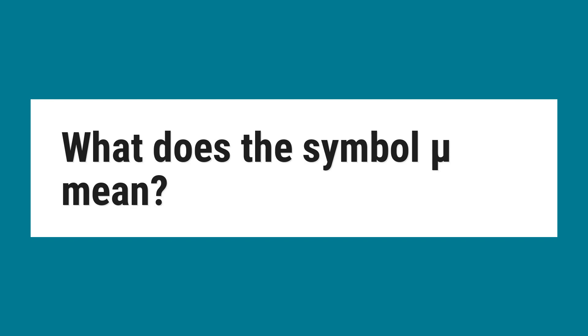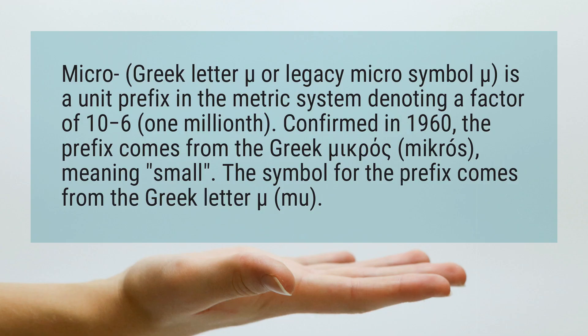What does the symbol mu mean? Micro — the Greek letter mu, or legacy micro symbol — is a unit prefix in the metric system denoting a factor of 10 to the minus 6, or 1 millionth. Confirmed in 1960, the prefix comes from the Greek word mikros, meaning small. The symbol for the prefix comes from the Greek letter mu.